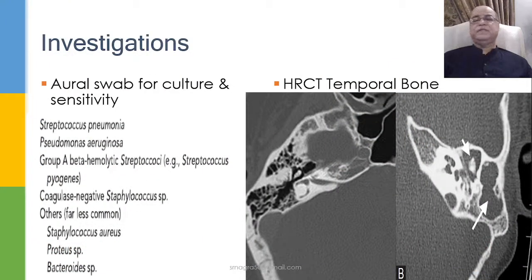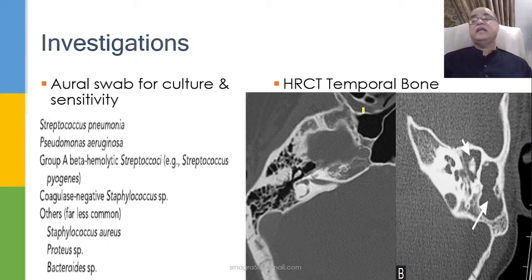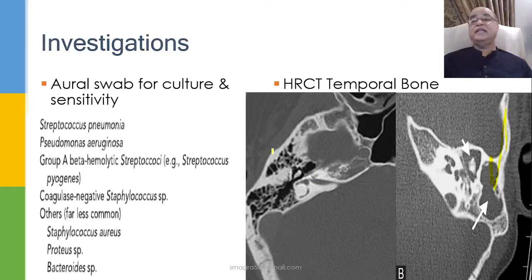An ear swab should be sent for culture and sensitivity, which will show Streptococcus pneumoniae, though Pseudomonas aeruginosa or Staphylococcus aureus may also be found depending on whether the underlying otitis media is acute or chronic. High-resolution CT scan of the temporal bone will show coalescence of the mastoid air cells — a single mastoid cavity — as seen in the picture, in contrast to the normal intact mastoid cellular system on the other side.